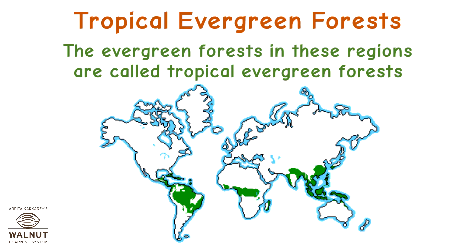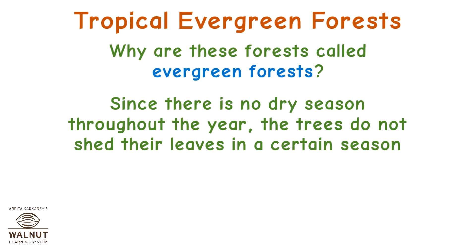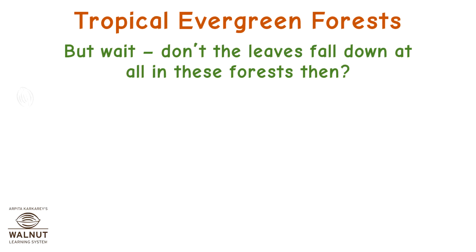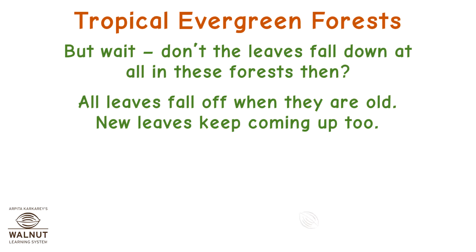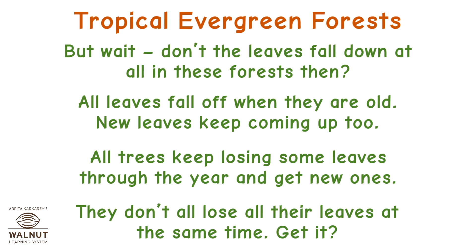The evergreen forests in these regions are called tropical evergreen forests. Why are these forests called evergreen? Since there is no dry season throughout the year, the trees do not shed their leaves in a certain season. As the trees are green throughout the year, they are called evergreen — which means green forever. All leaves fall off when they are old, and new leaves keep coming up. Trees keep losing some leaves through the year and get new ones, but they don't all lose their leaves at the same time.